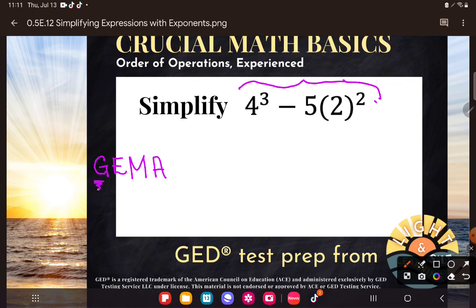So order of operations says do the groupings first, then any exponents, then any multiplication and its inverse division, and then finally any addition and its inverse subtraction.